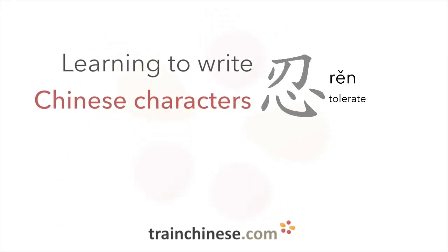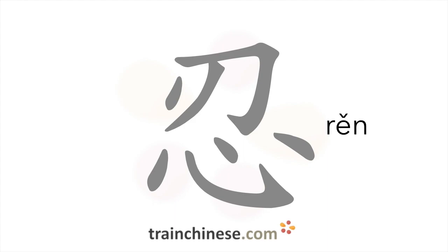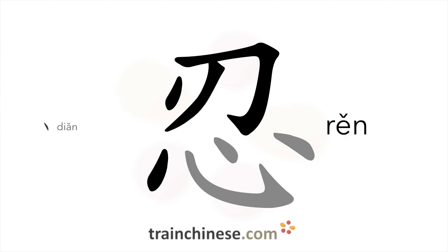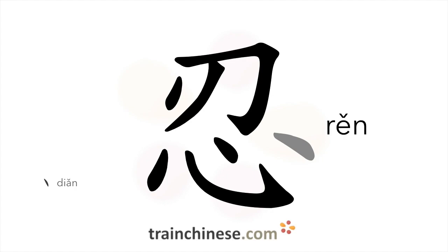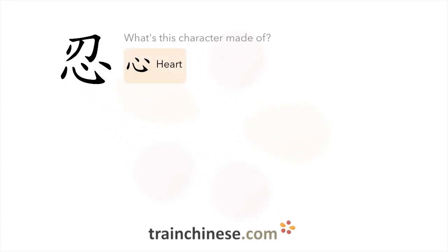Let's take a look at this character. It's written with seven strokes. Let's see what this character is made of. This character is using the heart radical.